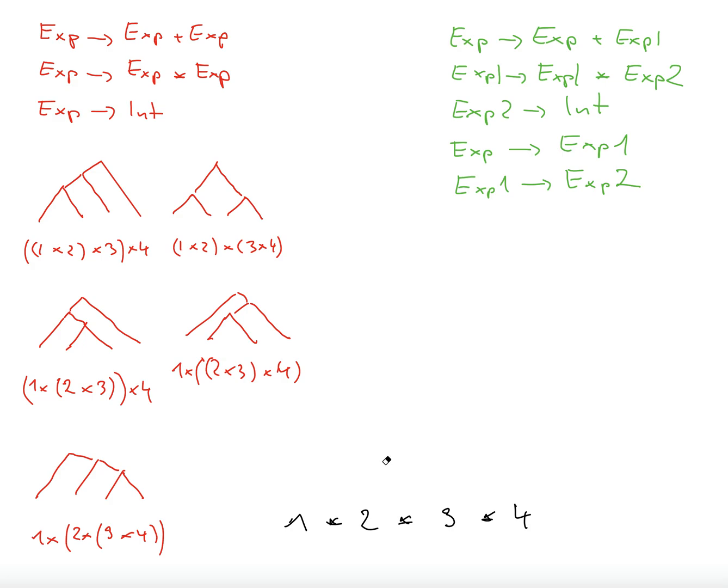And of course we know that the result of a multiplication will not depend on which of the trees we choose. But remember that a parser doesn't know the meaning of the expressions. So the parser doesn't know anything about what multiplication is.